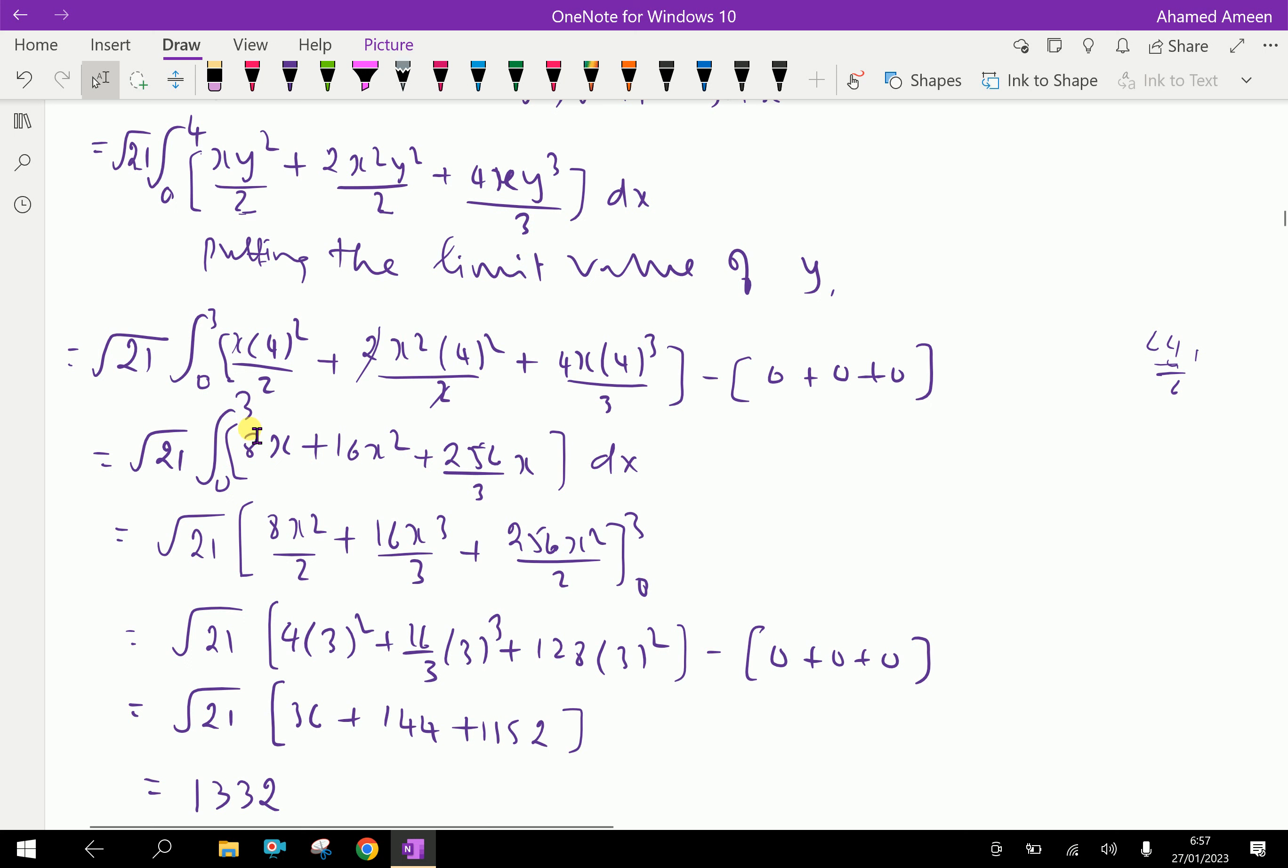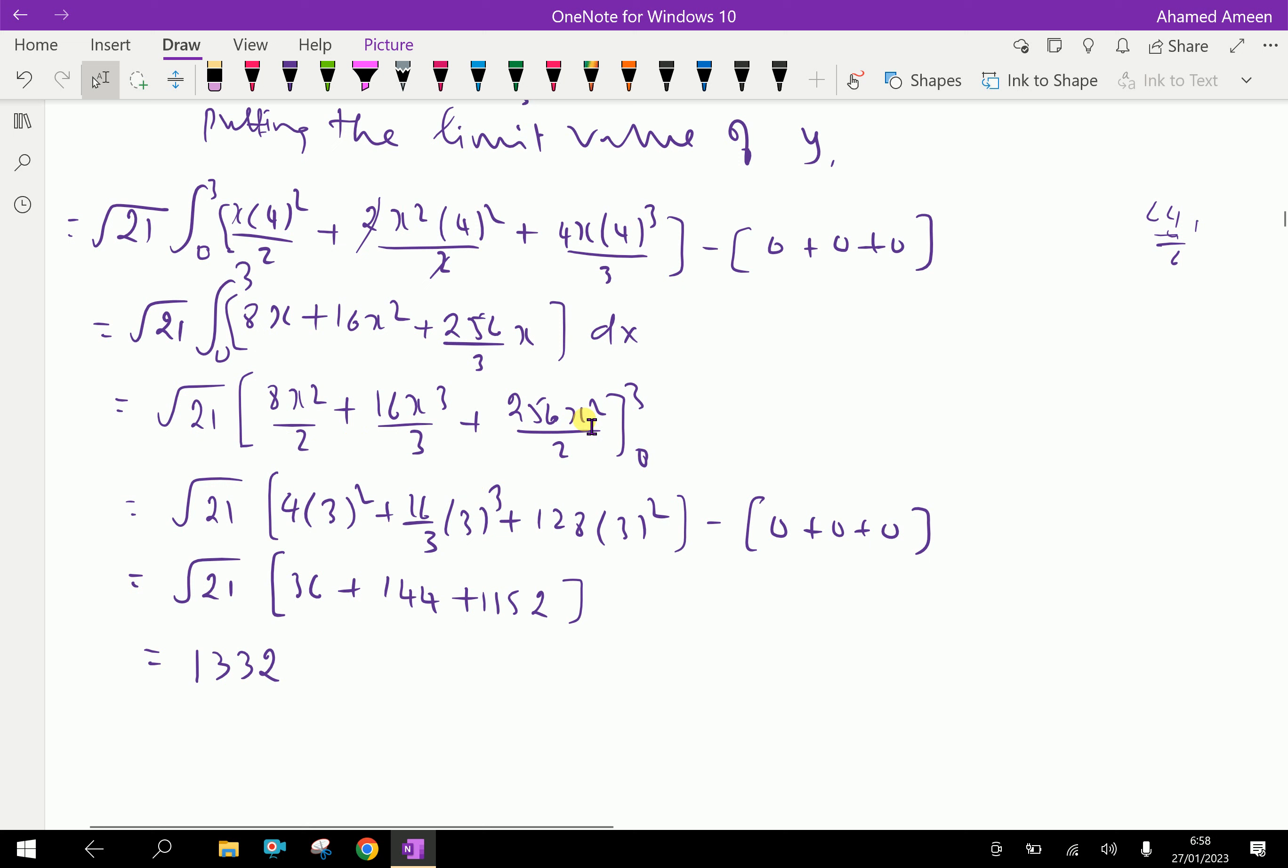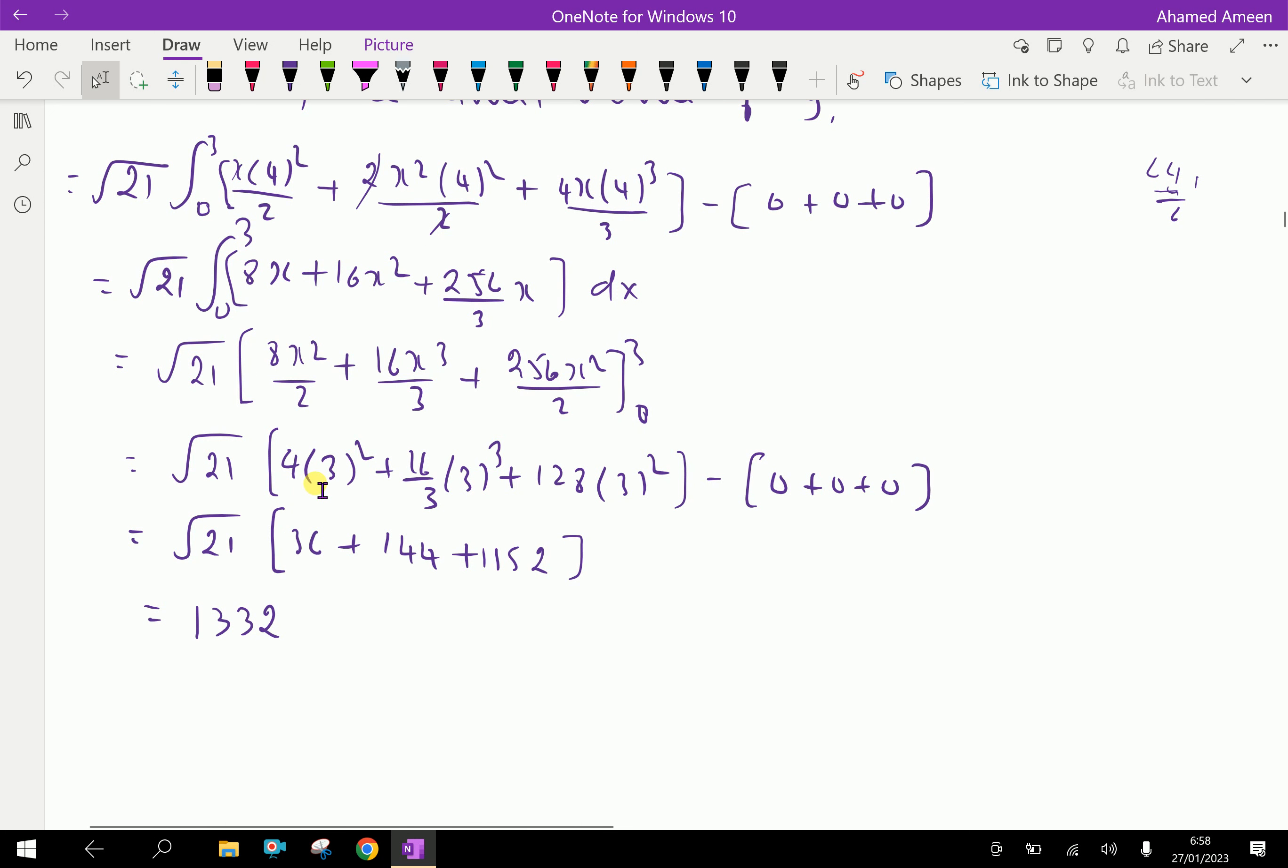Now integrate with respect to x from 0 to 3: 8x²/2 + 16x³/3 + 256x²/6. Put the limit x = 3: √21 times [4(3²) + 16(3³)/3 + 128(3²)]. The lower limit is 0, so all zeros.